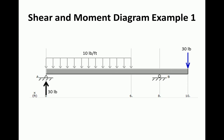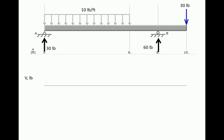Those come out to be 30 pounds as the upward reaction at the pin at A, and 60 pounds is the reaction at B. That's always the first step that we have to do to be able to draw the shear and bending moment diagrams.